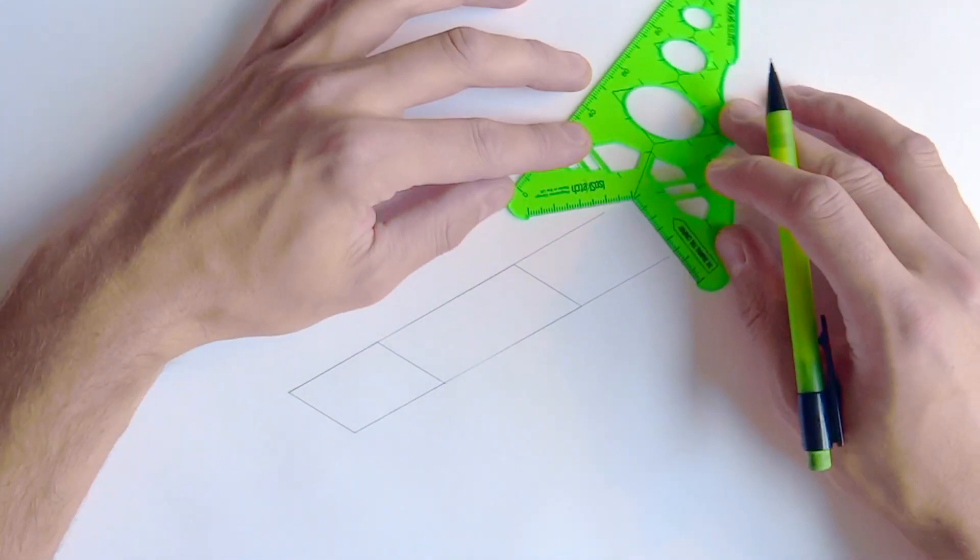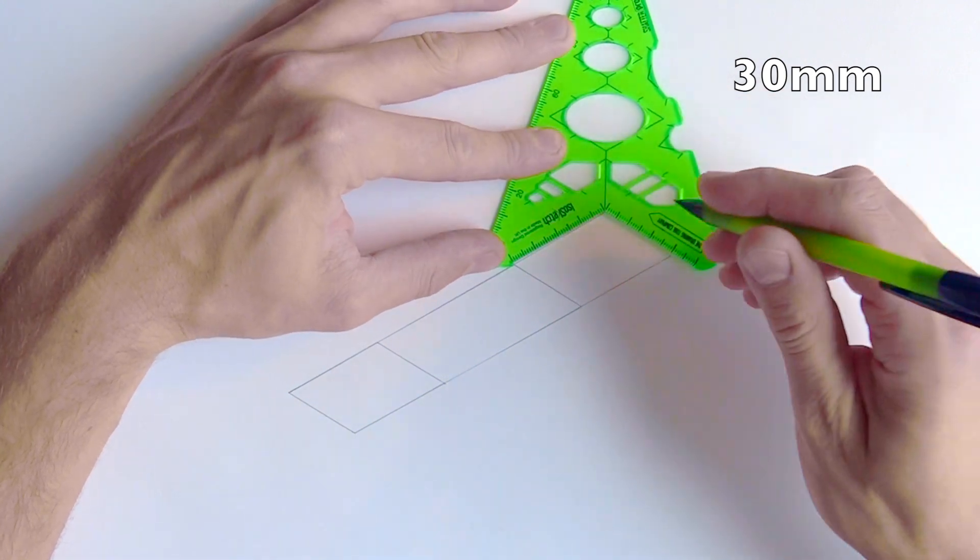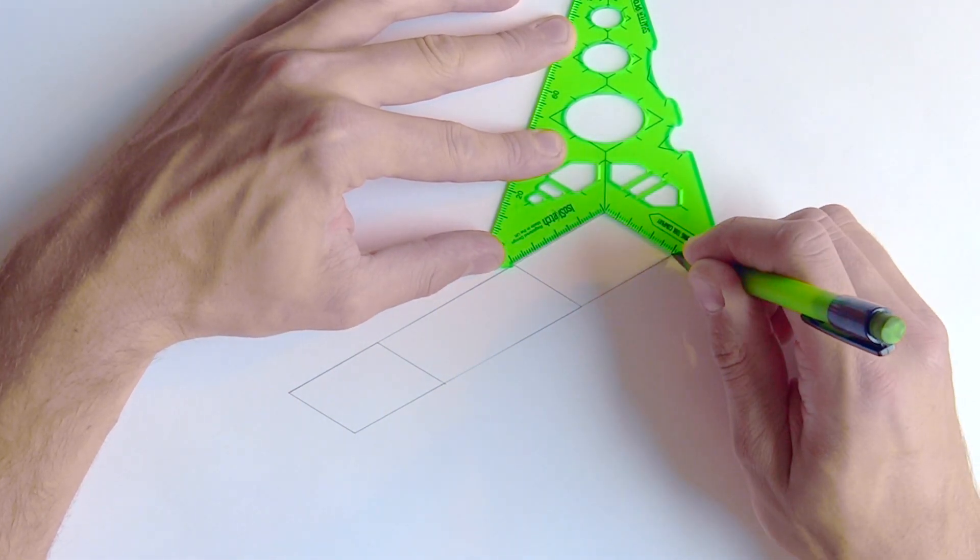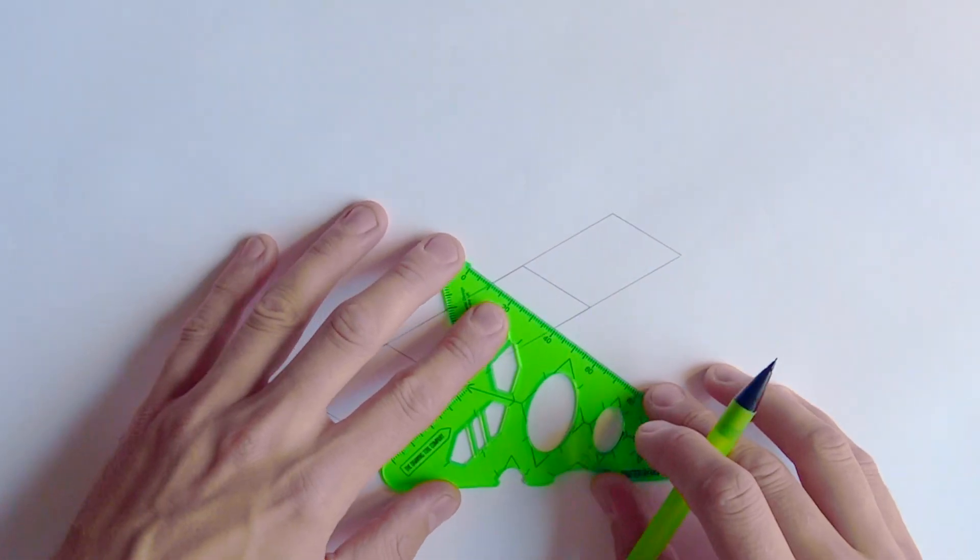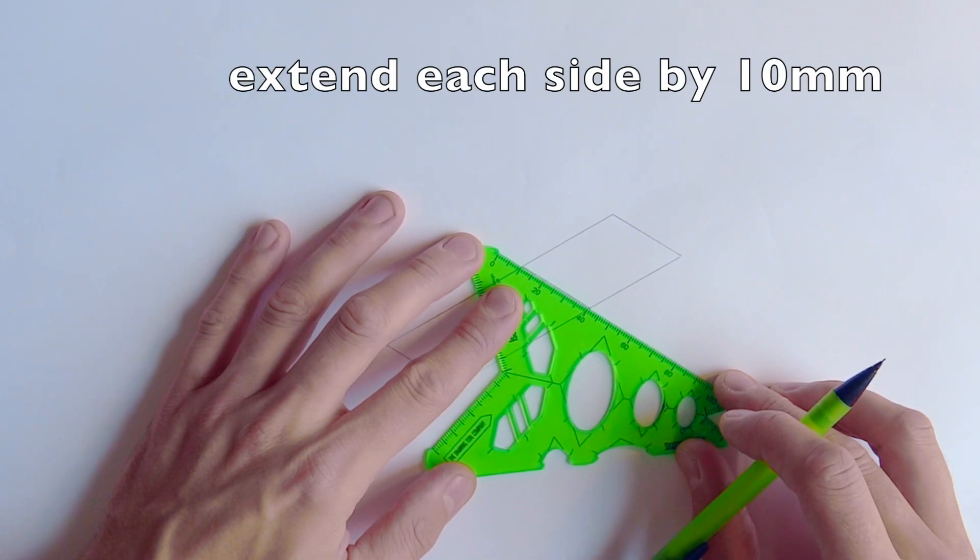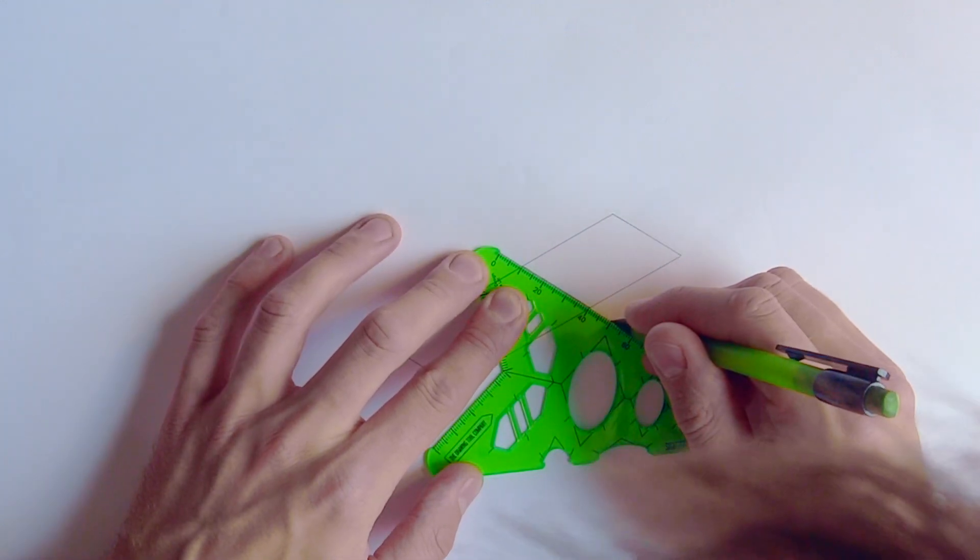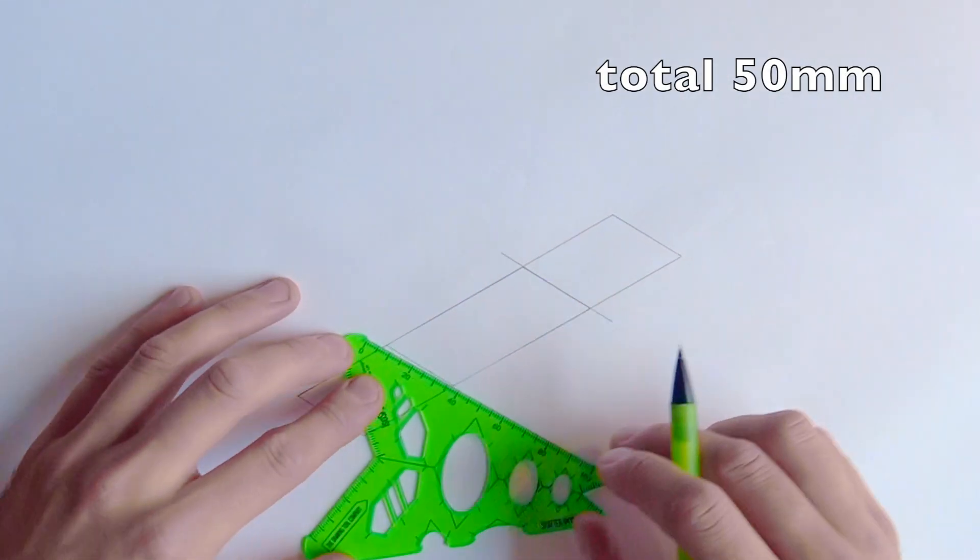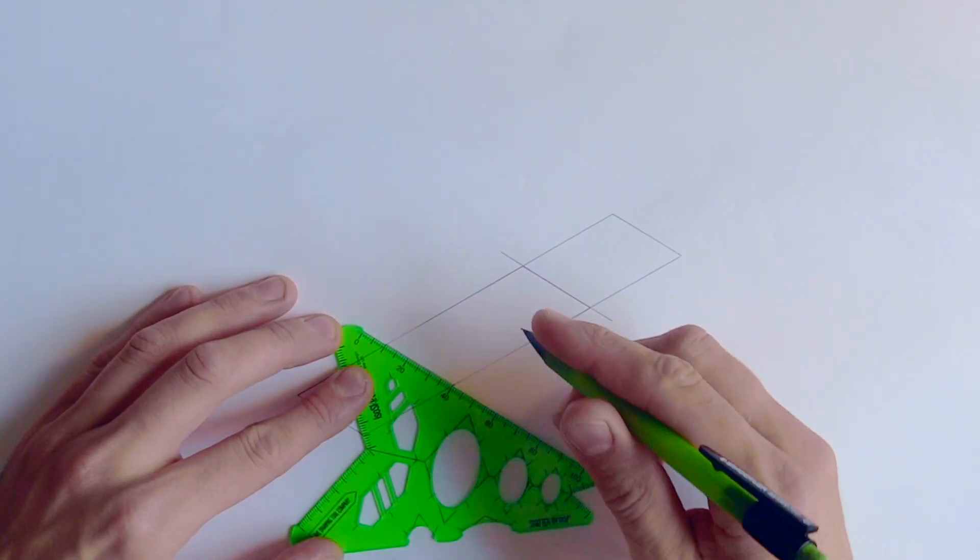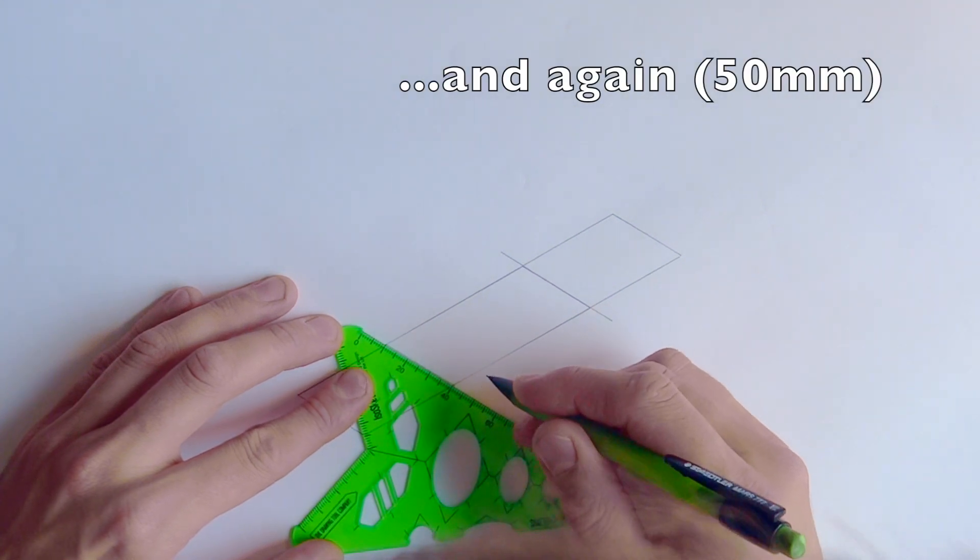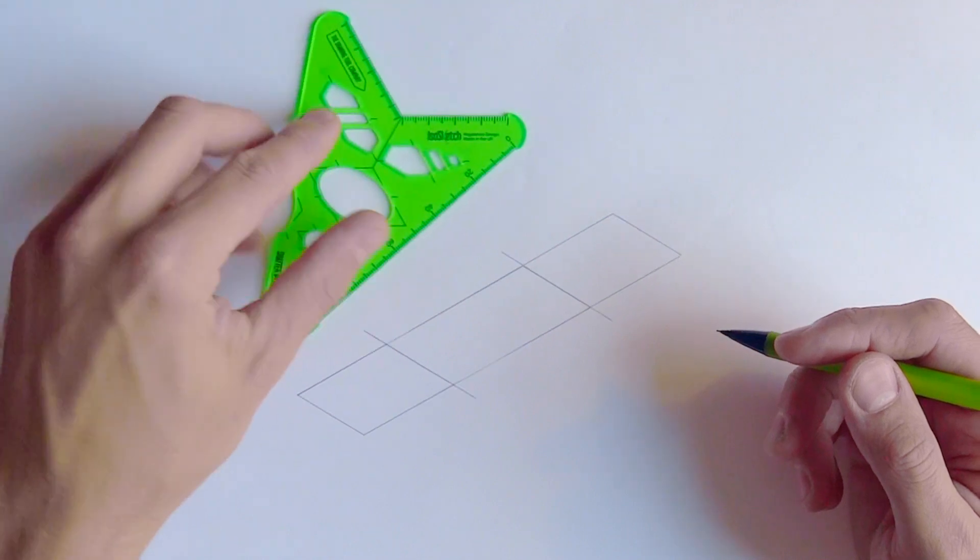We're just going to create the shape here using the ISO sketch and using the V shape to keep things in a lovely parallel isometric view. What you should have is a shape that measures 30 millimeters by 40 plus 60 plus 40 millimeters. Now we're going to extend these lines, the ones you can see in the middle, by 10 millimeters using the ruler. You've got a total line length there of 50 millimeters going across, making kind of a top hat shape and then an upside down top hat shape.